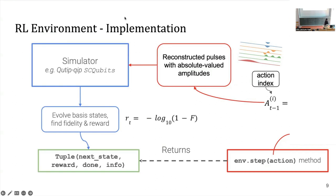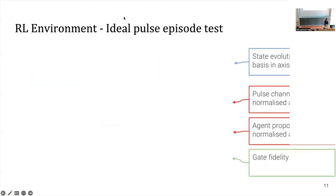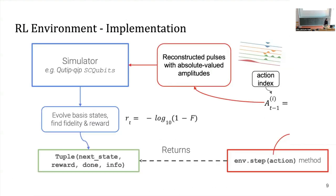The reward is taken as the negative log of the infidelity. We use the log because we want fidelity to be very close to one, and if kept linear the signal trickling back to the agent would be very small. This is a trick found in previous literature on how they apply the reward.